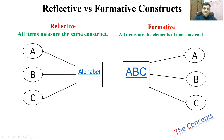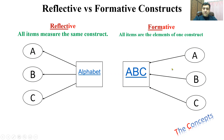Because this construct reflects these items, all items do so independently. Now let's look at the other side. The root word is 'form' — we call it formative because all items are elements of one construct. In other words, all of these items combined form this variable or construct. The construct is made up of A, B, and C together.